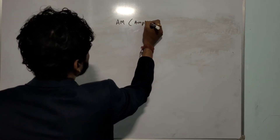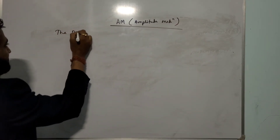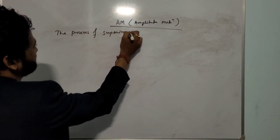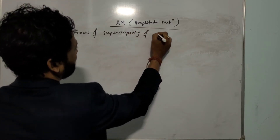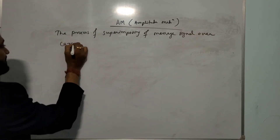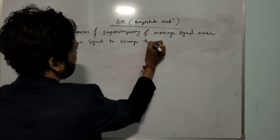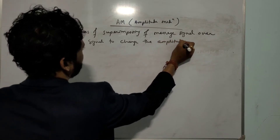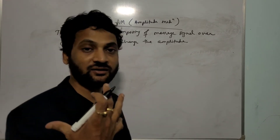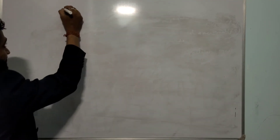Amplitude modulation. What is the definition? The process of superimposition of the message signal over the carrier signal so that the amplitude of that modulated signal will change — that is called amplitude modulation. Let us understand this concept.